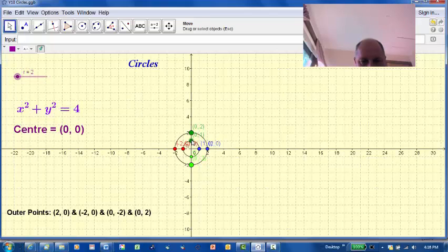You can see by the outer points. The 0, 1 has now become 0, 2. The point 1, 0 is now 2, 0.